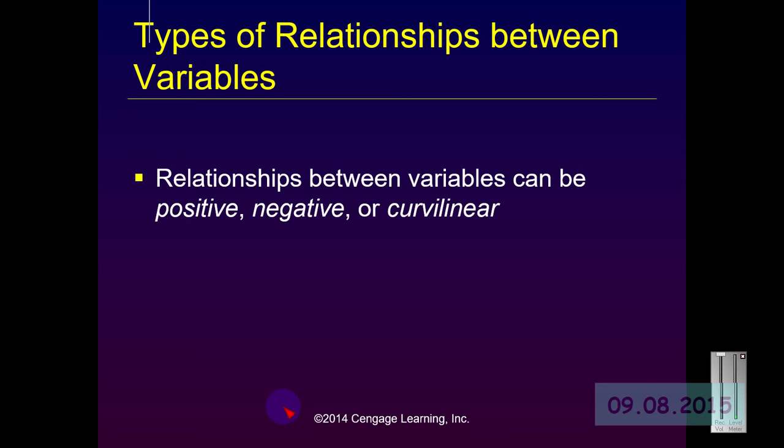When we describe relationships between independent and dependent variables, we tend to describe them as positive or negative. However, sometimes we want to look to see if a relationship could be curvilinear.